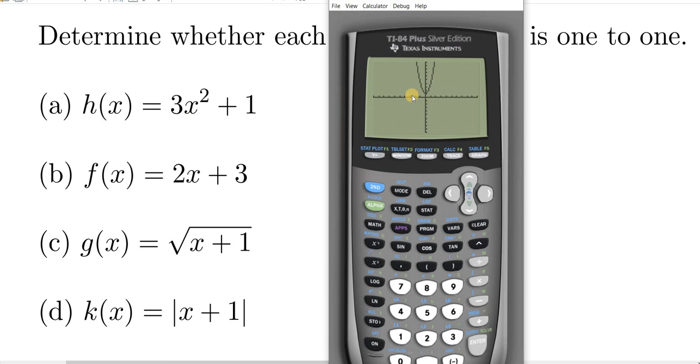No matter how many horizontal lines you draw, they should only cross once. If that happens, then it's one to one. If you can find just one line that crosses twice, then it would not be one to one. So this would not be one to one, because if I drew a horizontal line here, it would cross the graph twice.